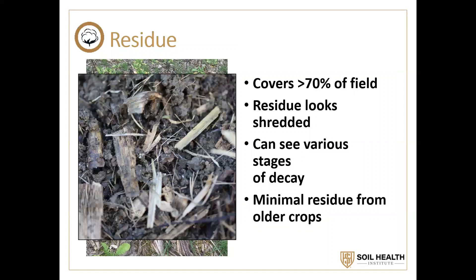We need to look at the residue — is it shredded, in small pieces like this? This shredding of corn stalks didn't take place by a tillage operation; it took place by microbes in the soil. There are arthropods and those types of things that tend to shred the residue and leave it in smaller pieces, making it easier for microscopic organisms to break it down, incorporate it, and convert it into organic matter. You ought to see organic matter in various stages of decomposition, and if you're seeing crop residue from two or three years old, that's a good indicator things aren't working well.